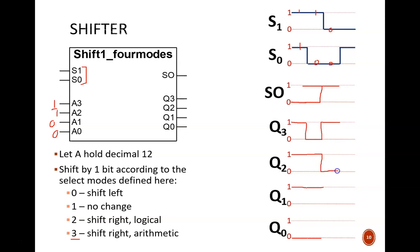A0 becomes Q1, so Q1 is low. And finally, Q0 is backfilled with zero.